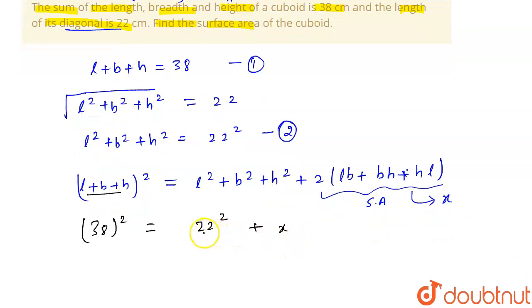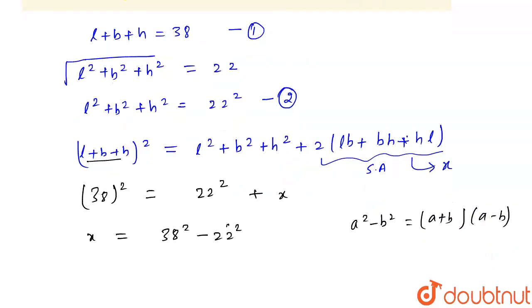So if we take this to the left hand side, it will become X is equal to 38 square minus 22 square. And this is of type A square minus B square. We can expand this as A plus B and A minus B. So we will write using this formula.